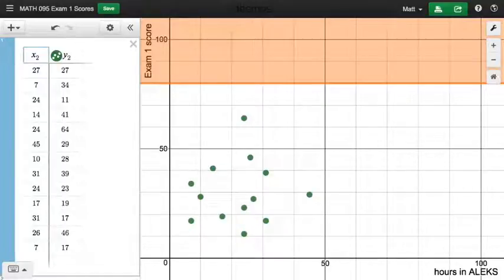For example, this first data point in the list, 27, 27, that means that there is some student in this class who spent 27 hours working in their ALEKS study plan over the semester, and that student earned on the first attempt at the exam a score of 27 points. And so that point, 27 comma 27, is one of the points that's plotted here in the graph.